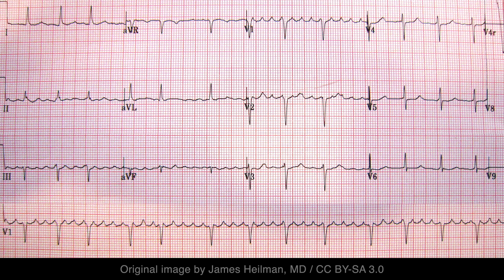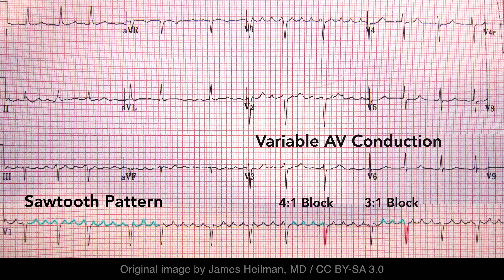To summarize the most important findings: atrial flutter classically results in a sawtooth pattern, and conduction delay at the AV node typically results in a degree of AV block.